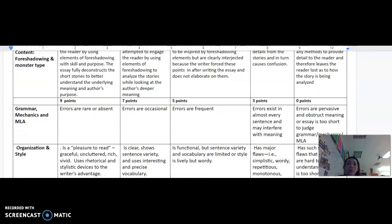Alright, and then we have two 9 point categories for grammar, mechanics, and MLA heading, which you can look at my example then that I'm going to have a video on. Errors are rare or absent, get you a full 9 points. 7 points, errors are occasional but not overbearing. 5 points, errors are frequent. 3 points, errors exist in almost every sentence and may interfere with meaning. And 0 points, errors are all over the place and therefore the essay can't really be judged.